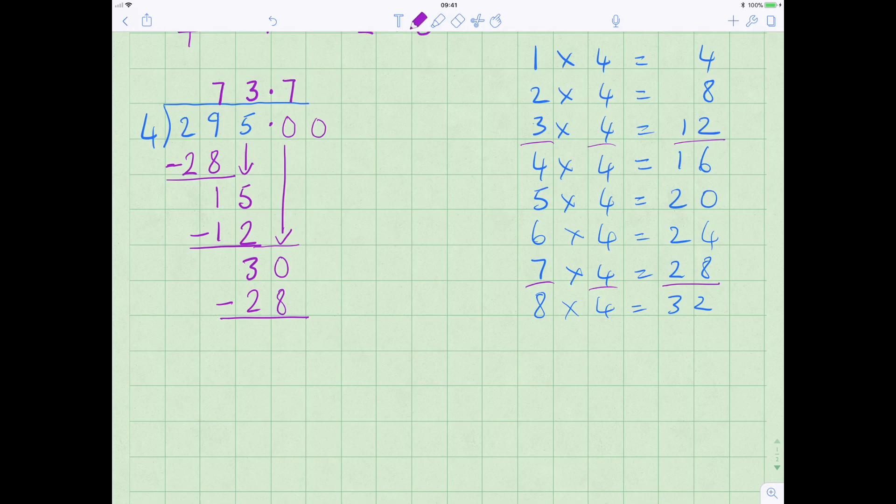0 minus 8, we can't do, so we take a 10 from the 30, so it becomes 10 minus 8, and 10 minus 8 is 2, and then we bring the next 0 down.